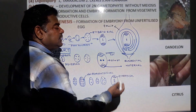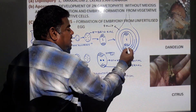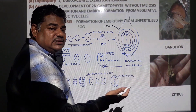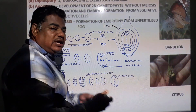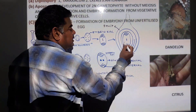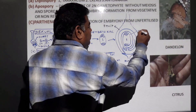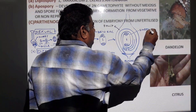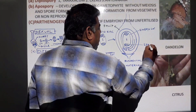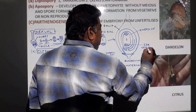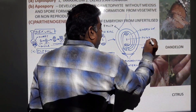Towards the chalazal end, three antipodal cells form. Towards the micropylar end, one functional egg cell forms, surrounded by two synergid cells — this is the egg apparatus. The two central nuclei are the polar nuclei. Together this forms the embryo sac.